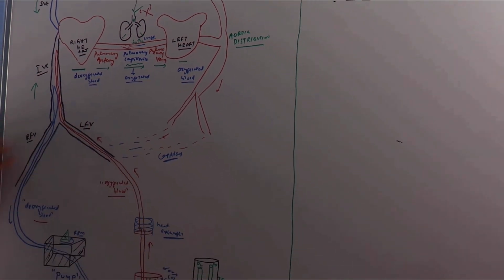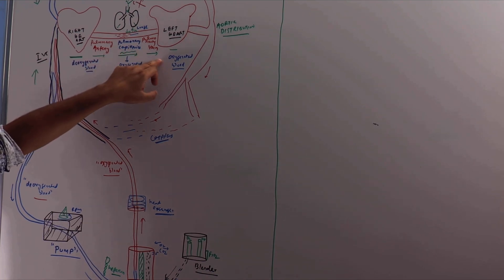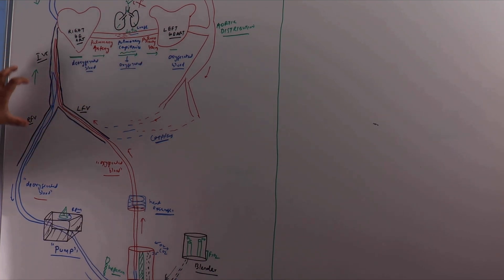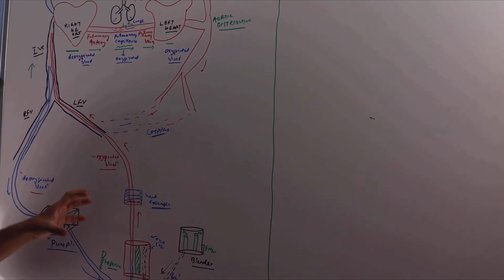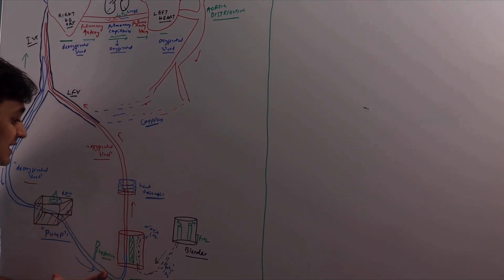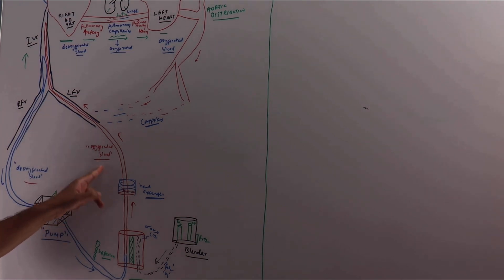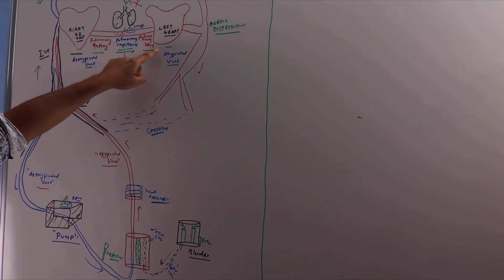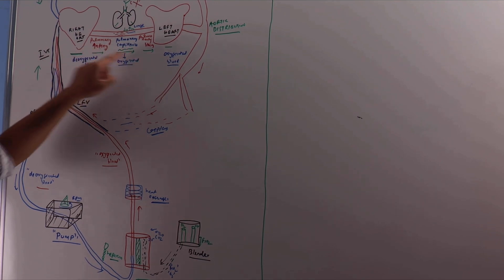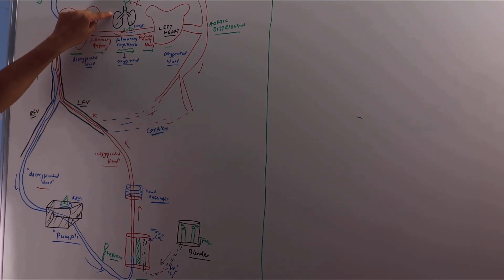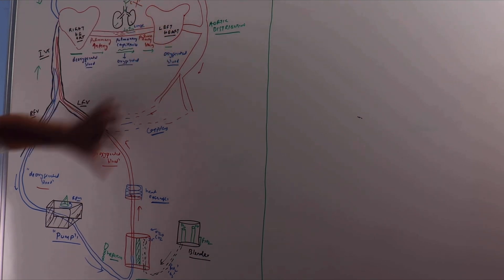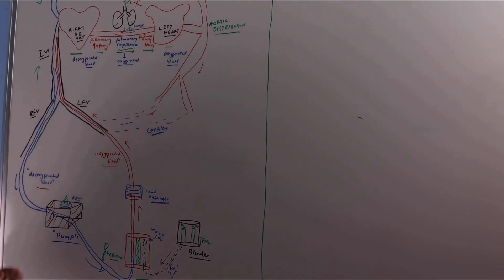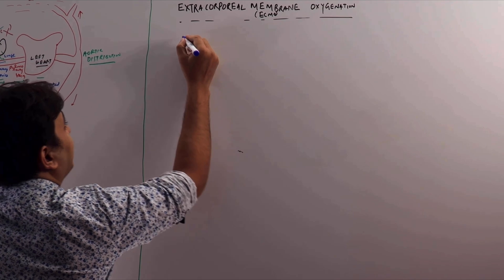Because the left heart is working fine, if we can take out the deoxygenated blood from the body, oxygenate it, and remove the carbon dioxide outside the body using the ECMO machine, then put the oxygenated blood into the right heart — from there it can go to the left heart by the same pathway. Now it is not dependent upon the lungs for gas exchange, so the left heart can distribute oxygenated blood to the whole body. This is the principle of the ECMO machine.